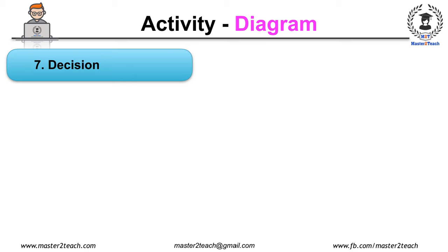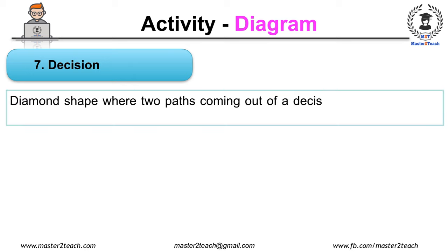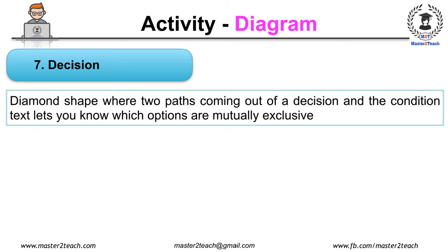Where two paths coming out of a decision and the condition text lets you know which options are mutually exclusive.